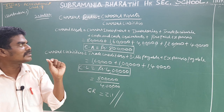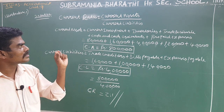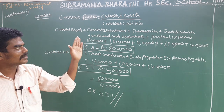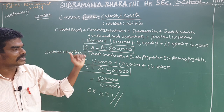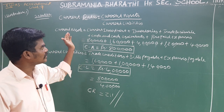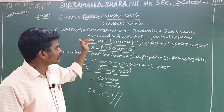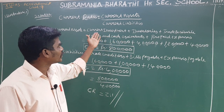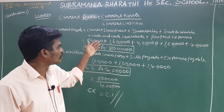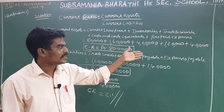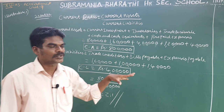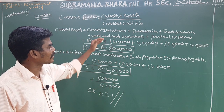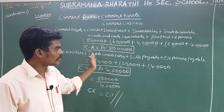Now, current assets divided by current liabilities gives us our answer. Current assets include inventory, receivables, and separate assets. Current liabilities include bills payable, creditors, and expenses payable.